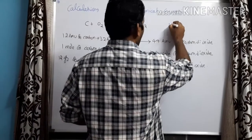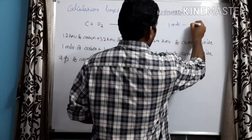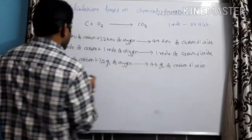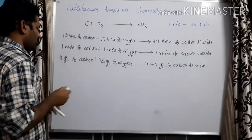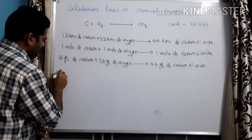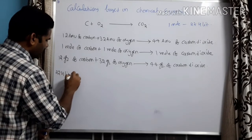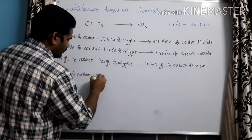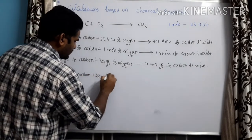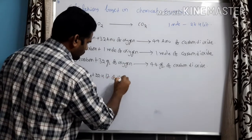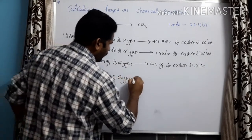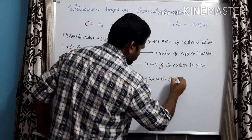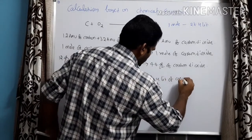Under the mole concept, one mole occupies a volume of 22.4 liters. Applying this concept to the equation, I can rewrite it as: 22.4 liters of carbon reacts with 22.4 liters of oxygen to form 22.4 liters of carbon dioxide.